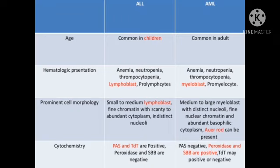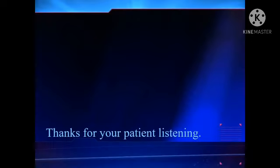Key differences between ALL and AML: ALL is common in children whereas AML is common in adults. Both present with anemia, neutropenia, and thrombocytopenia. In ALL you see lymphoblasts — small to medium cells with fine chromatin, scant cytoplasm, and indistinct nucleoli. In AML you see myeloblasts — medium to large cells with distinct nucleoli, fine nuclear chromatin, abundant basophilic cytoplasm, and Auer rods may be present. On cytochemistry, myeloperoxidase staining is positive in AML and negative in ALL.